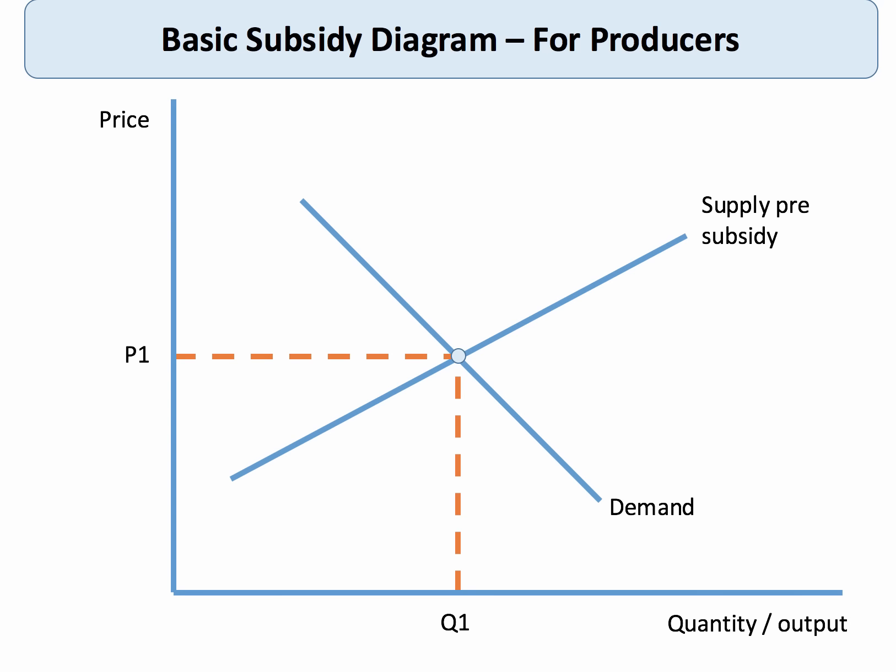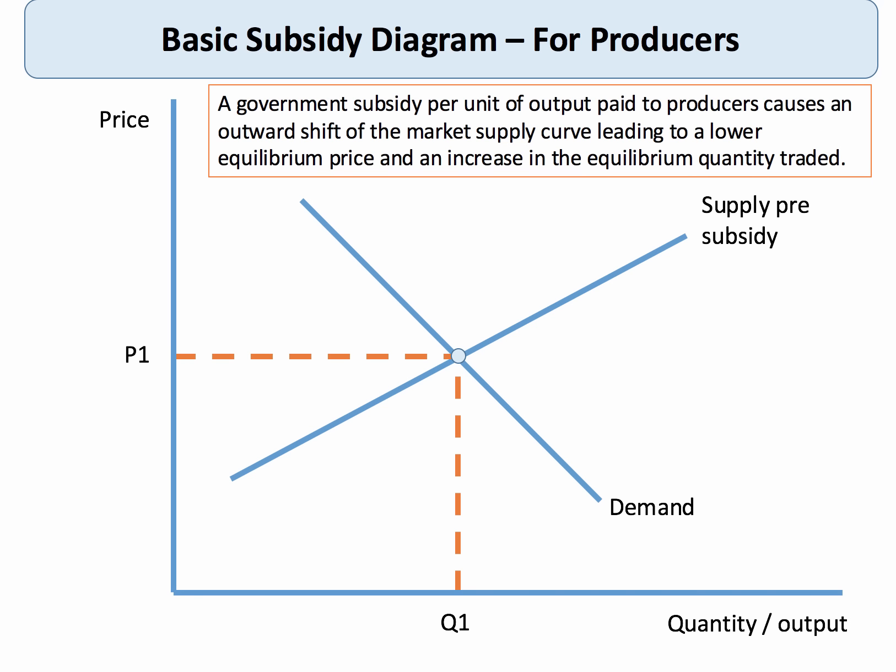Let's go through the basic diagram of what happens if the government introduces a subsidy on a producer. Here's the original situation: the price is in equilibrium at P1 and the quantity is Q1. We'll look at what effect a subsidy has on market prices for consumers — to what extent will a subsidy feed through to a lower price for final consumers.